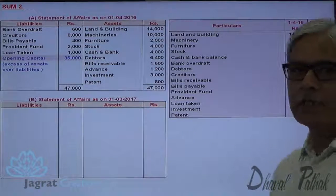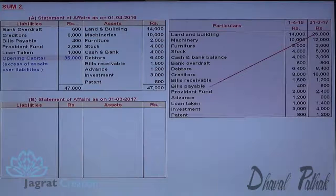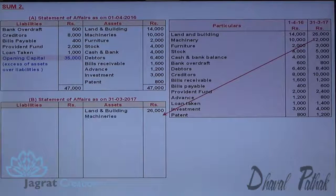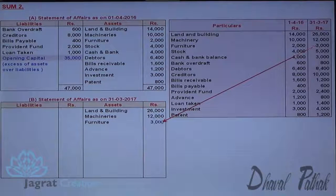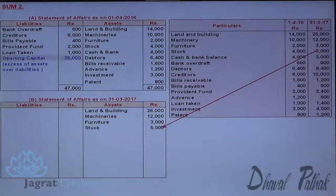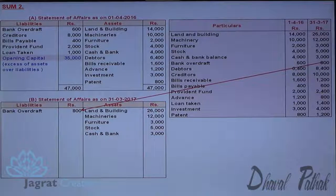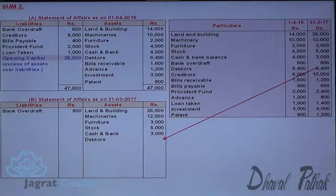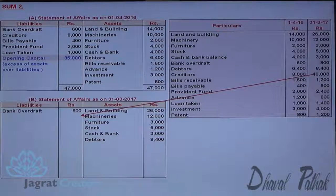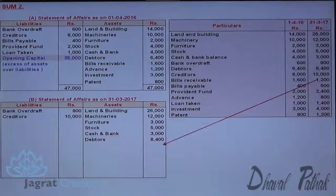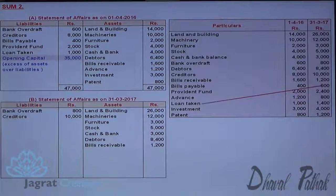Now I have to prepare a closing statement of affairs from this information. Land and building on the asset side. Machinery, furniture, stock, and cash and bank balance also on the asset side. Creditors are an obligation to pay the supplier — liability. Right to receive money from customers is debtors — asset side. Bills receivable and bills payable are treated the same way as before.